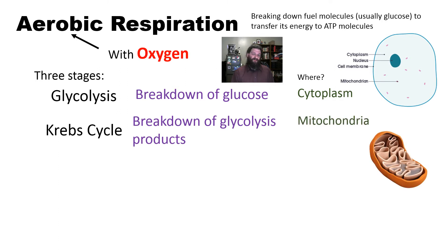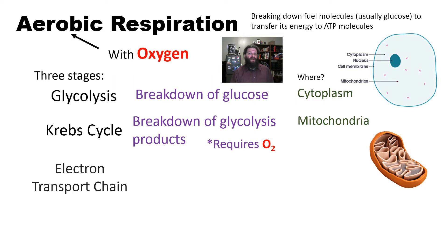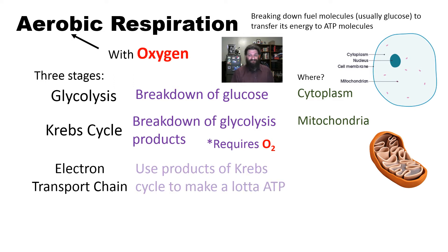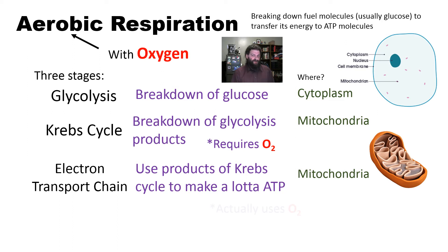The Krebs cycle takes place within the good old mitochondria. These chemical reactions of the Krebs cycle are only going to proceed if oxygen is available. The products of the Krebs cycle then move to the electron transport chain, which makes a whole lot of ATP, and it also takes place within the mitochondria. It's actually the electron transport chain specifically that does actually use the oxygen itself.